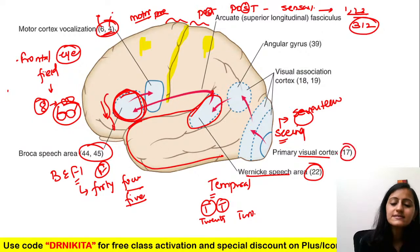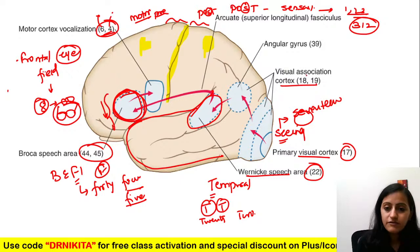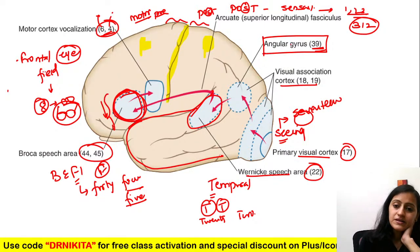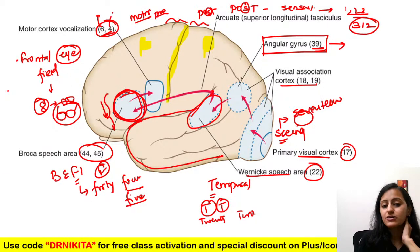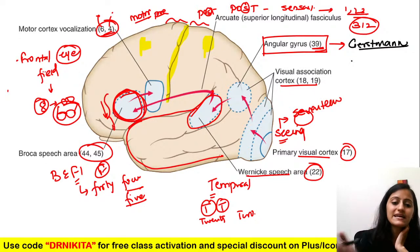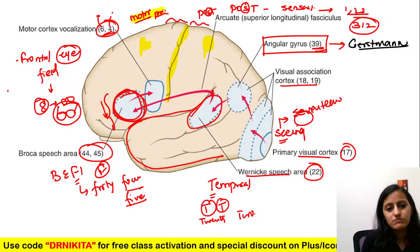The angular gyrus is Brodmann's area 39. Lesion of the angular gyrus in the dominant lobe leads to Gerstmann's syndrome — right-left disorientation, and others. So we have: motor, sensory, frontal eye field, Broca's, Wernicke's, visual cortex, and angular gyrus.